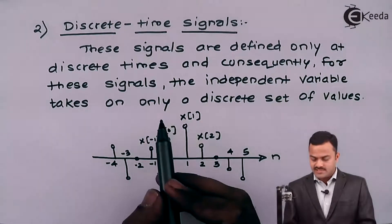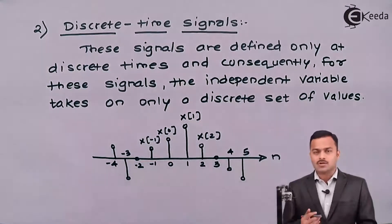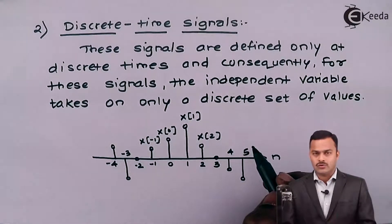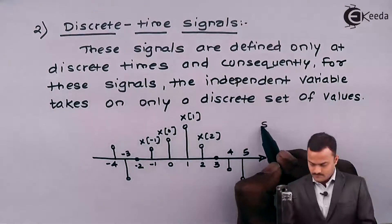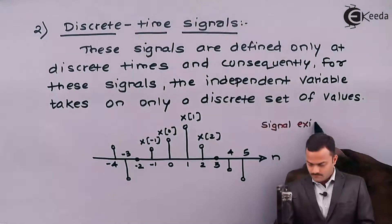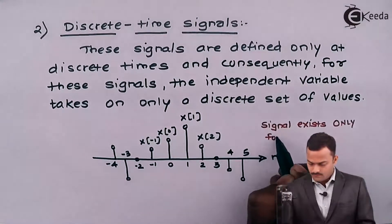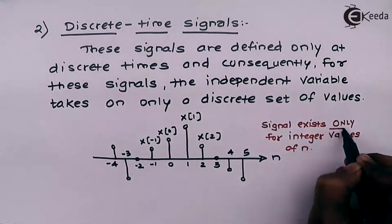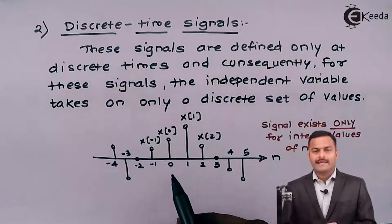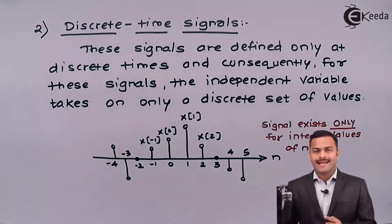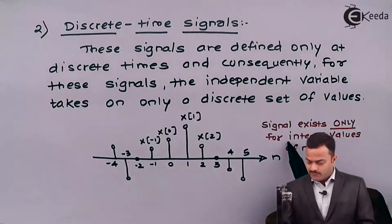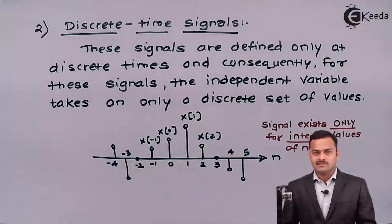One thing we have to observe for a discrete time signal: as we said earlier, the independent variable takes on only a discrete set of values — discrete set of values means only integers. So the signal exists only for integer values of n. 'Only' is the keyword here. We cannot have a discrete time signal for 0.5, we cannot have a discrete time signal for 3.5 — it has to be an integer value; only then does the discrete time signal exist.